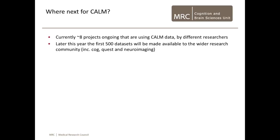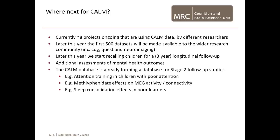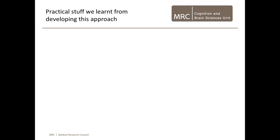Just very quickly to wrap up — where next for CALM? We currently have about eight ongoing projects using the CALM data. Later this year, the first 500 datasets will be made available to the wider research community, including cognitive, questionnaire, and imaging data. Also later this year we start recalling the children for a three-year longitudinal follow-up. We have some additional measures of health outcomes, and it's already forming a great database for follow-up studies on things like attention training interventions, medication effects for kids who've been medicated, and sleep consolidation effects in poor learners.